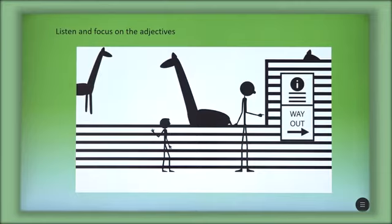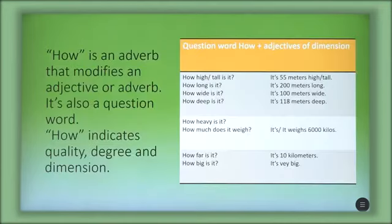Okay, from the conversation you heard some of the adjectives. We have the form how plus adjectives of dimension. How is an adverb that modifies an adjective or adverb. It is also a question word, and how indicates quality, degree, and dimension. You can see some of the adjectives of dimension: high, long, wide, deep, heavy, far, big, weigh.